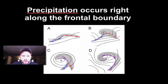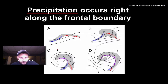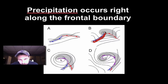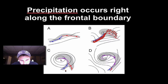Precipitation occurs right along the frontal boundaries. With any of these systems, you're going to get some precipitation right here, definitely around your low pressure, and then usually well ahead of the warm front. This grayed area is also representative of precipitation. So as you can see, precipitation occurs right along the front, usually well ahead of it, and then because it's a low pressure system, we'll have it there too.